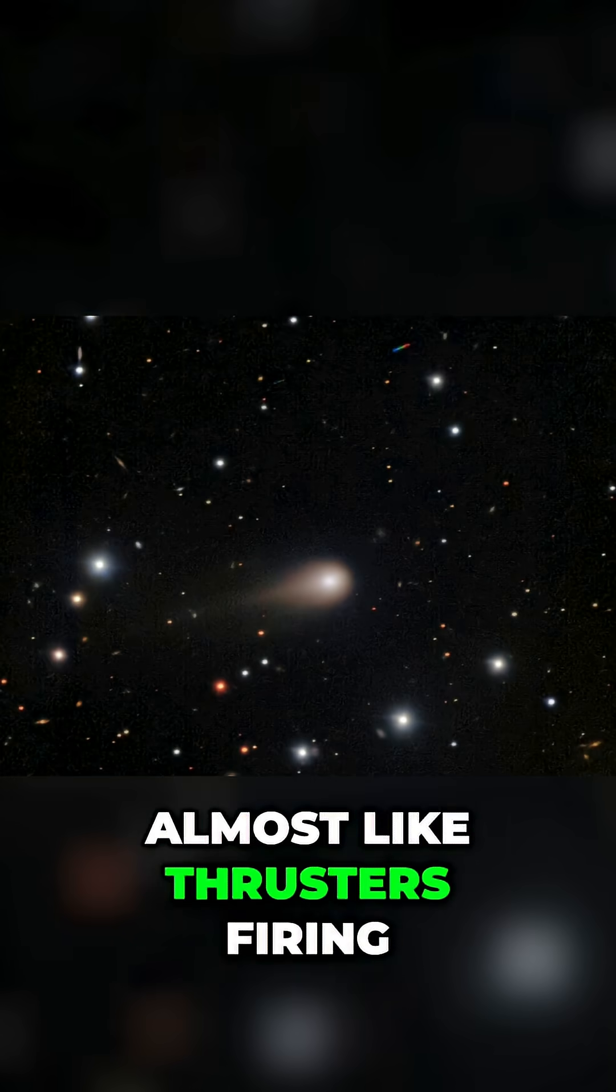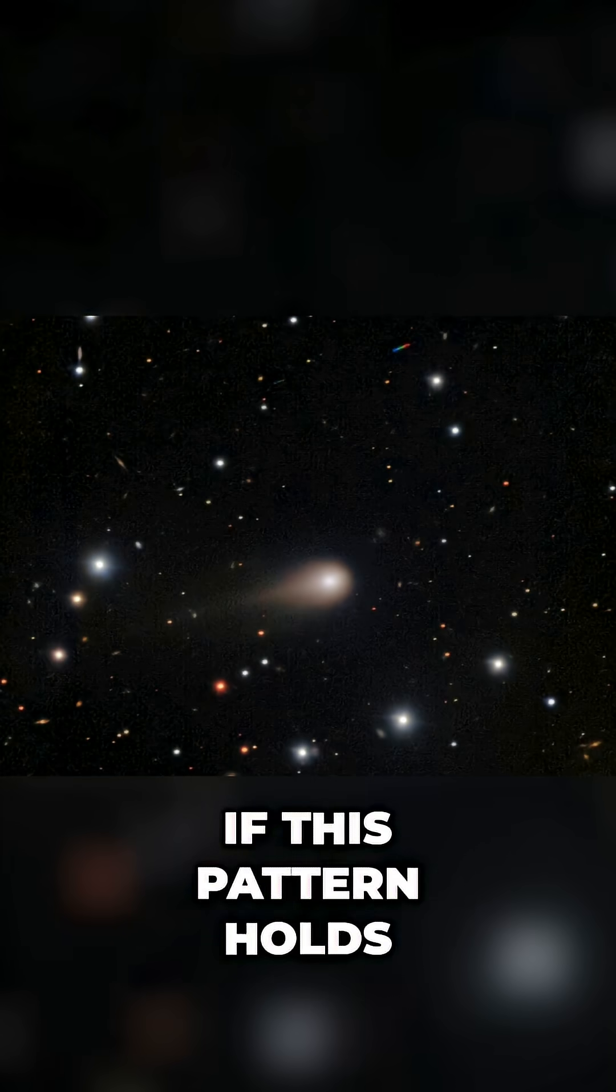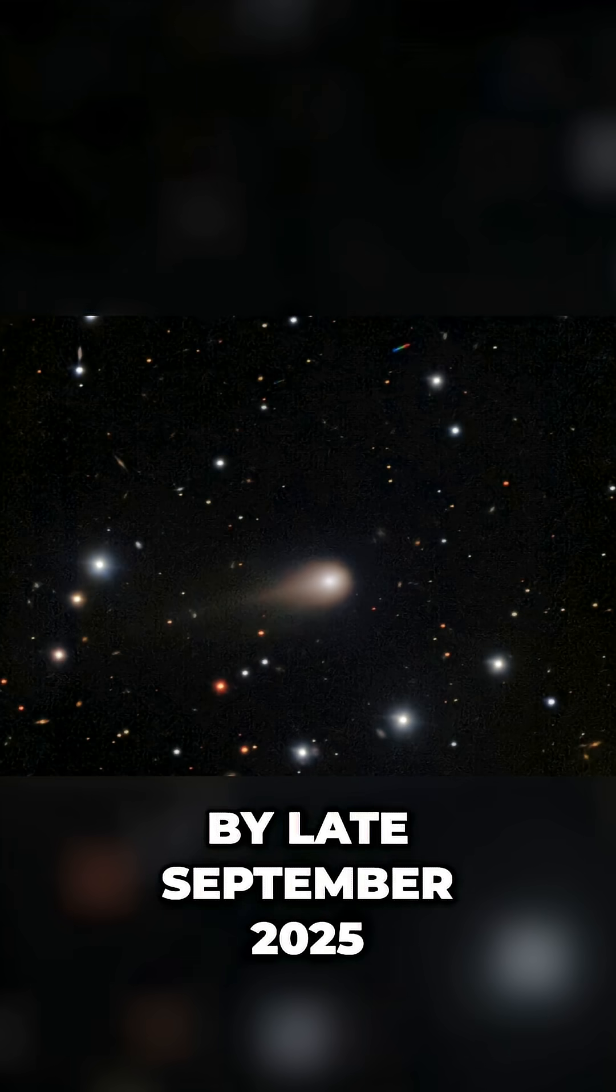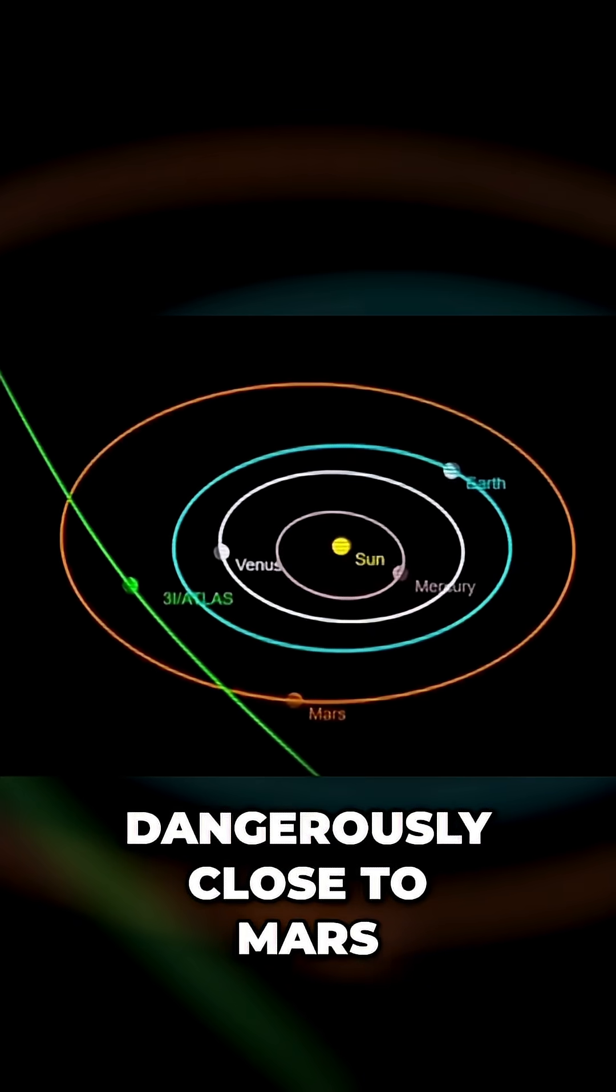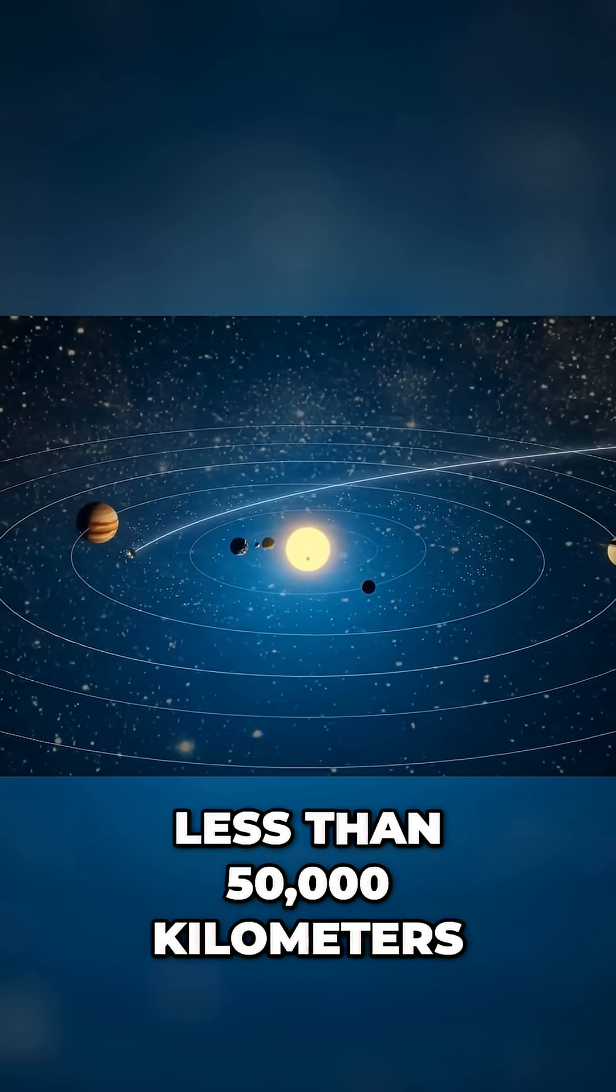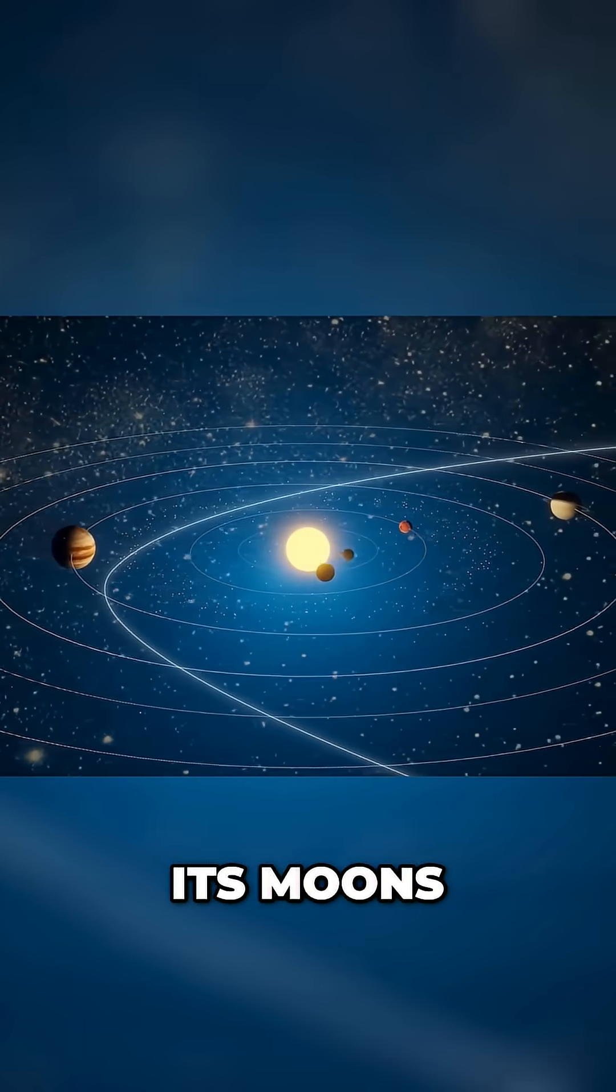If this pattern holds, by late September 2025, the comet could swing dangerously close to Mars, less than 50,000 kilometers, nearer than some of its moons. One strong outburst might even tip its orbit into a direct collision course.